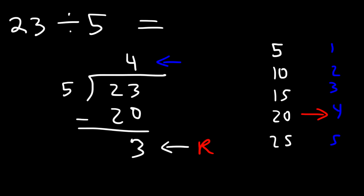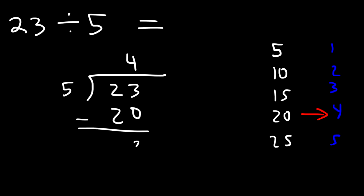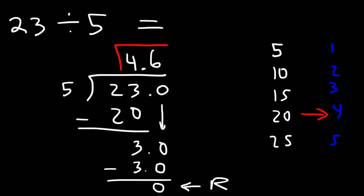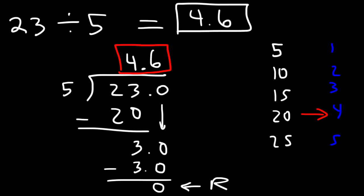Sometimes you may need to write your answer as a decimal, so you want to keep going until the remainder is 0. Now 5 doesn't go into 3 nicely, so we add a decimal point and a 0, bringing down a 0 and treating this as 30. How many times does 5 go into 30? 5 goes into 30 six times; 5 times 6 is 30, so 5 times 0.6 is 3. Now we have a remainder of 0, meaning 23 divided by 5 is exactly 4.6 as a decimal.